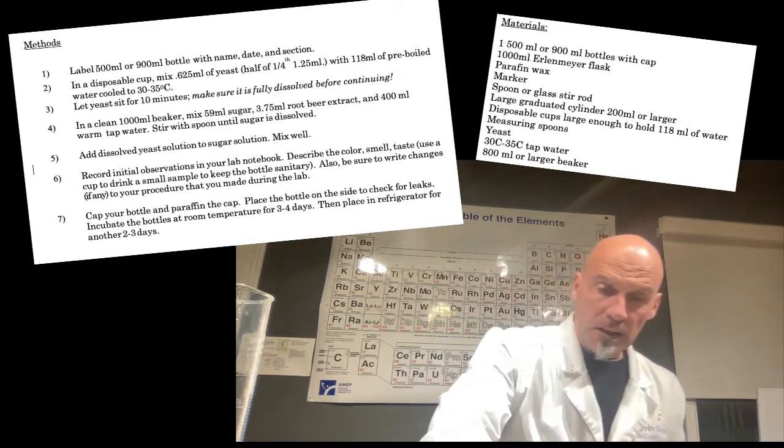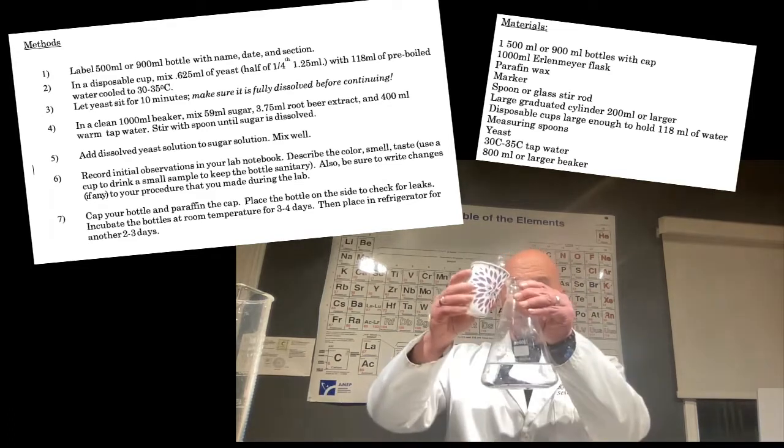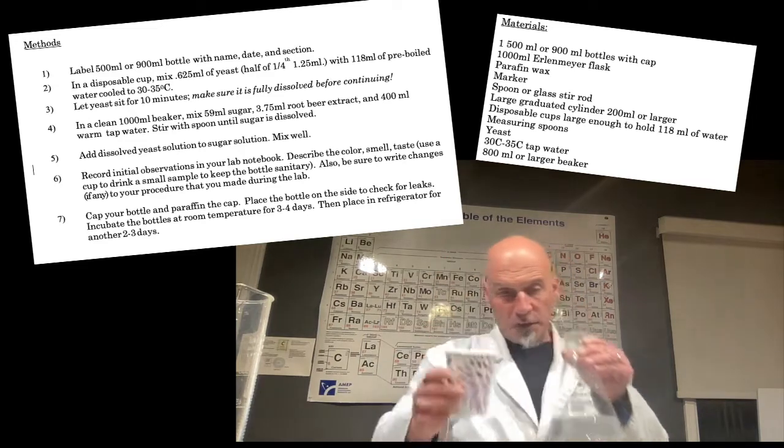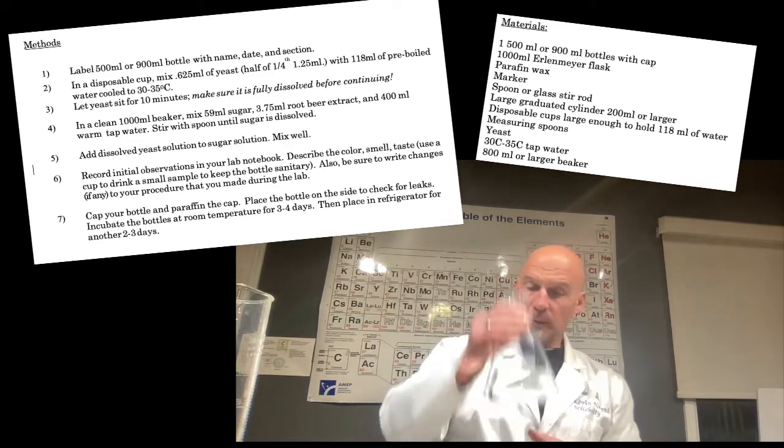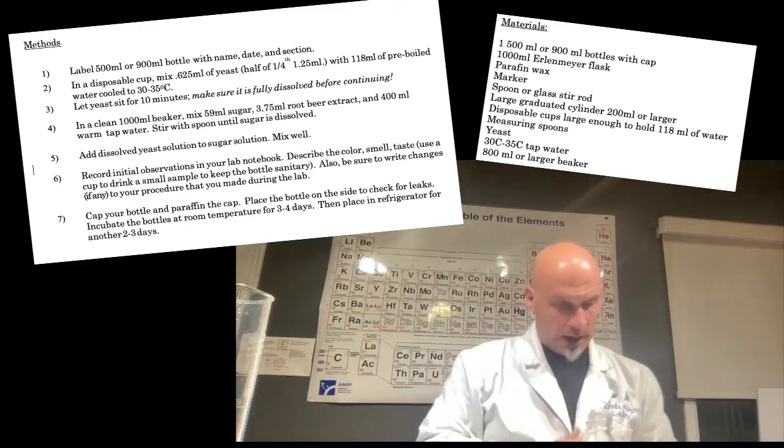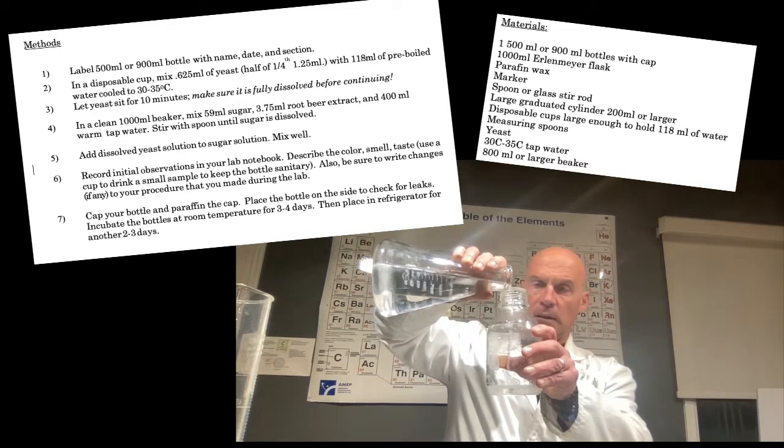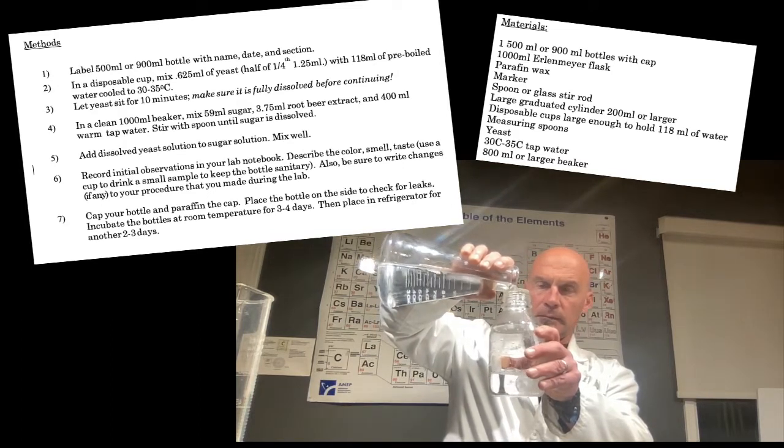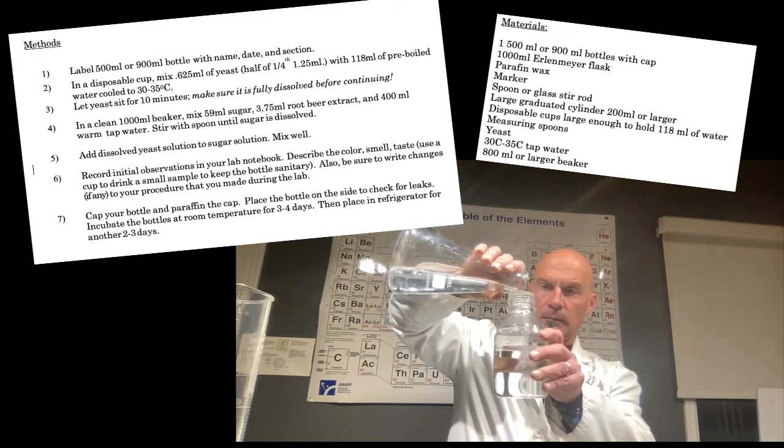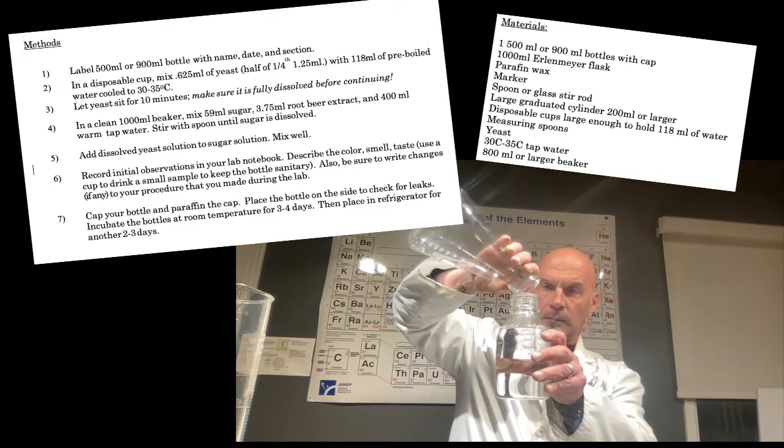Alright, then, ten minutes have passed. So you go ahead and add the yeast solution, which is now properly awake. You add it to the sugar solution and root beer solution. Now the yeast is going, yay, sugar, something to eat. A little buffet. Then, you pour that whole mixture. And again, you want to make sure that it's nice and mixed up. Then, you pour that mixture into your bottle.